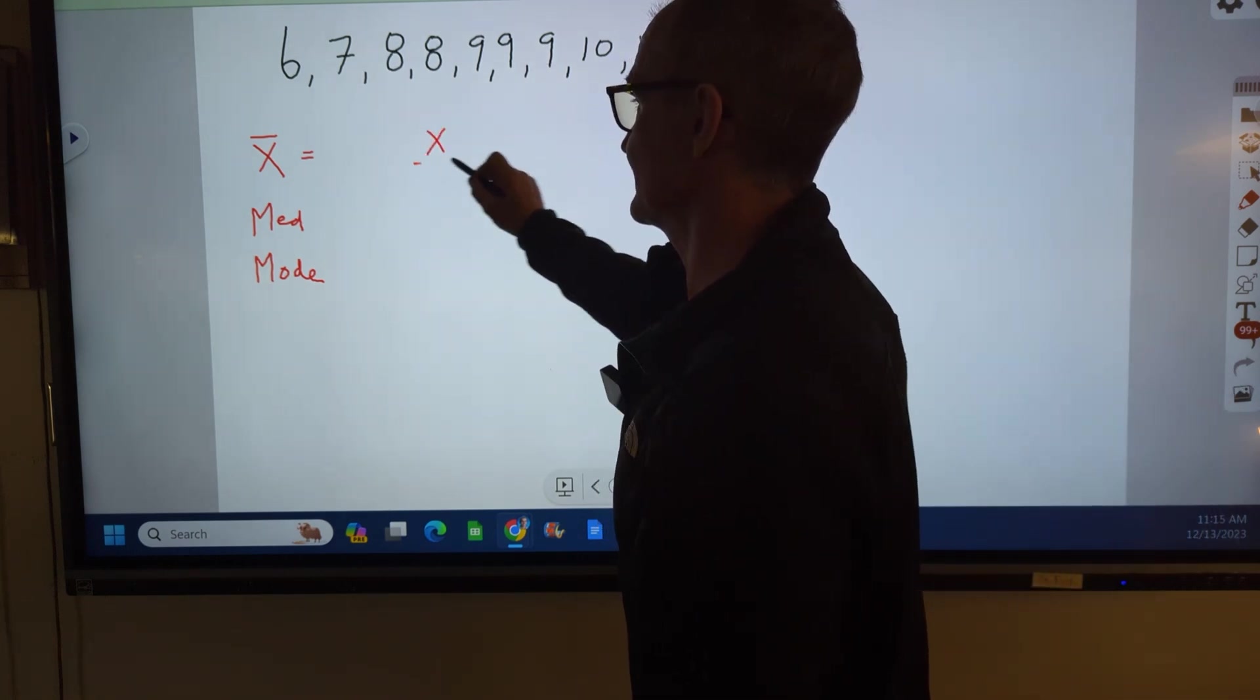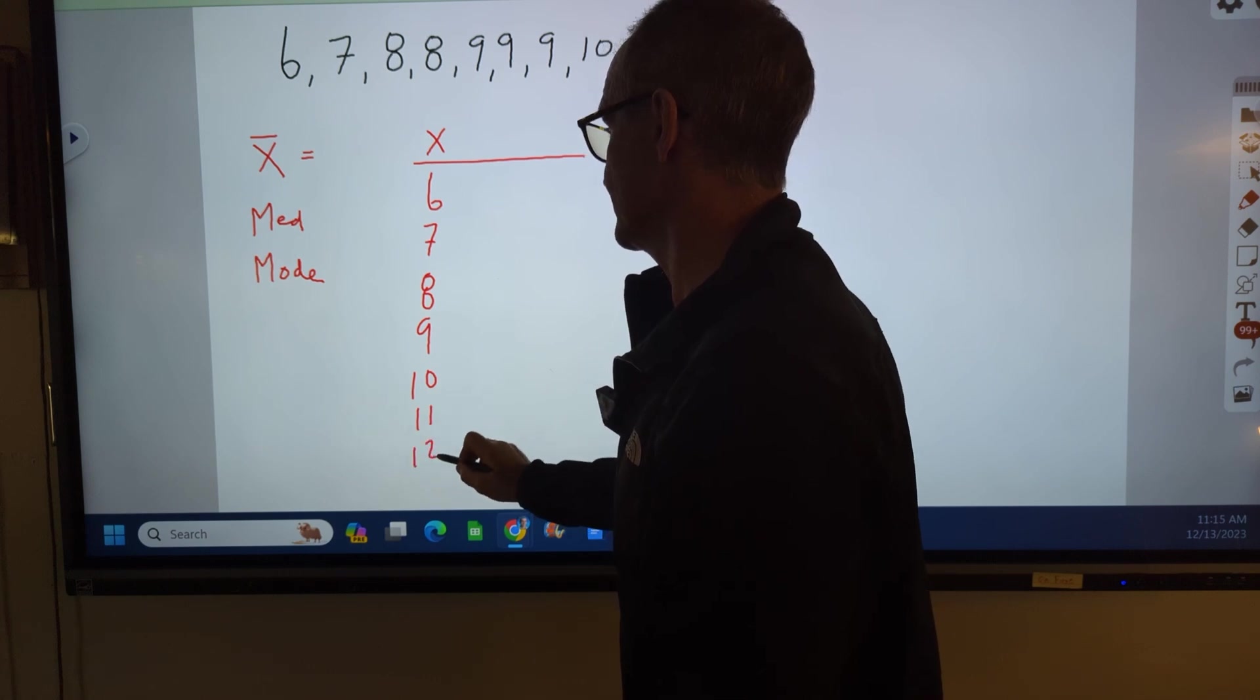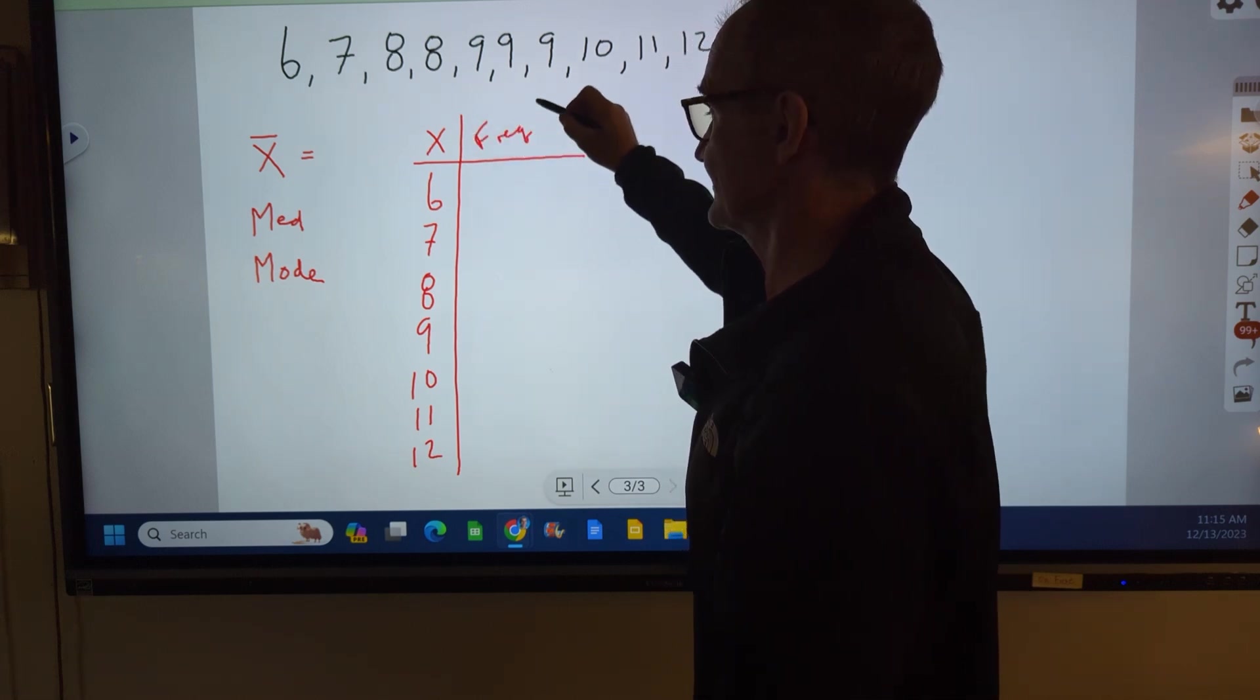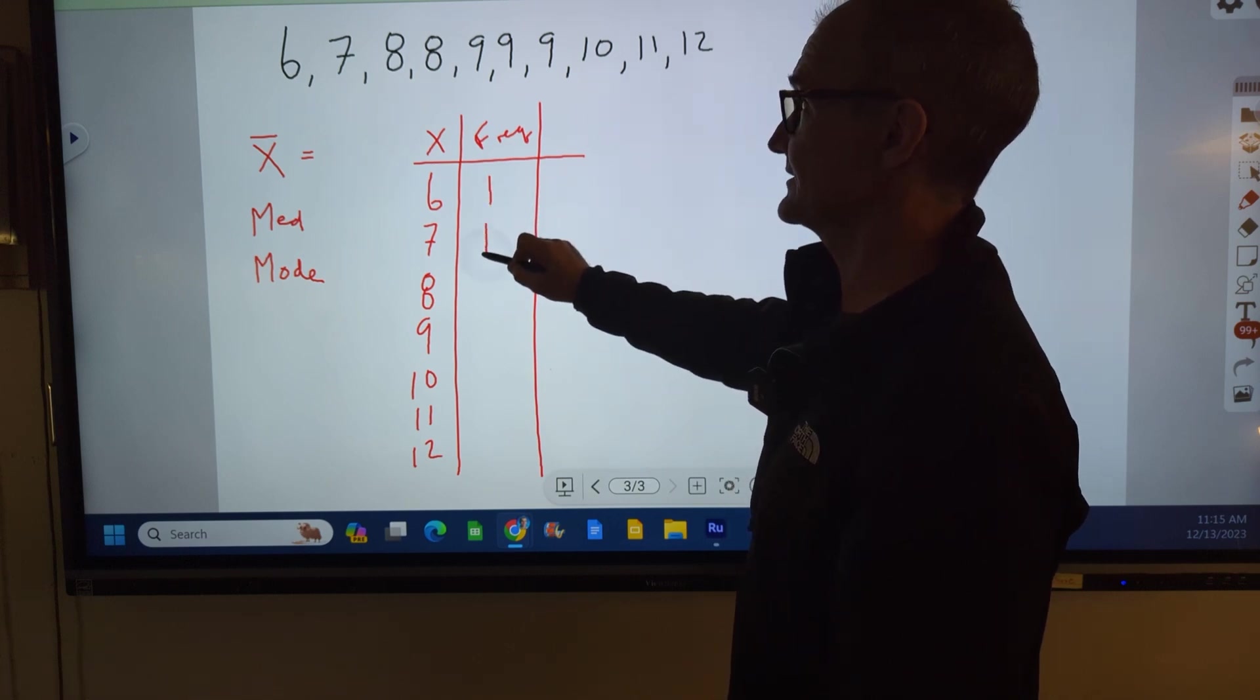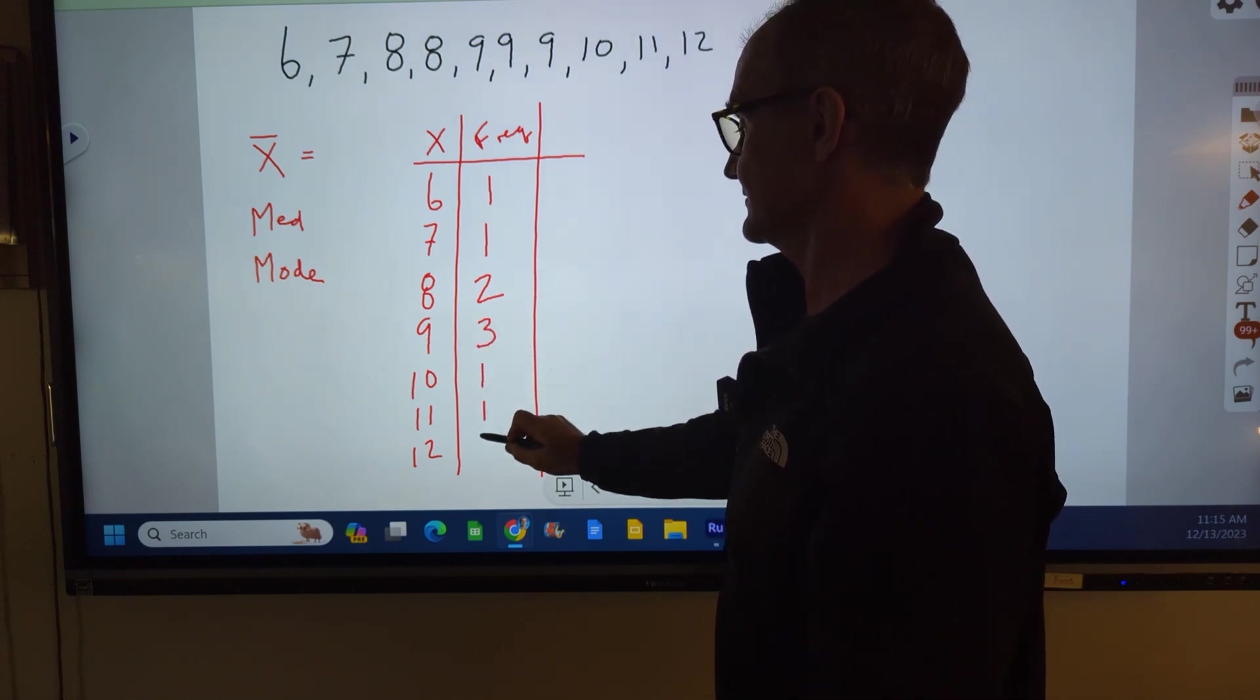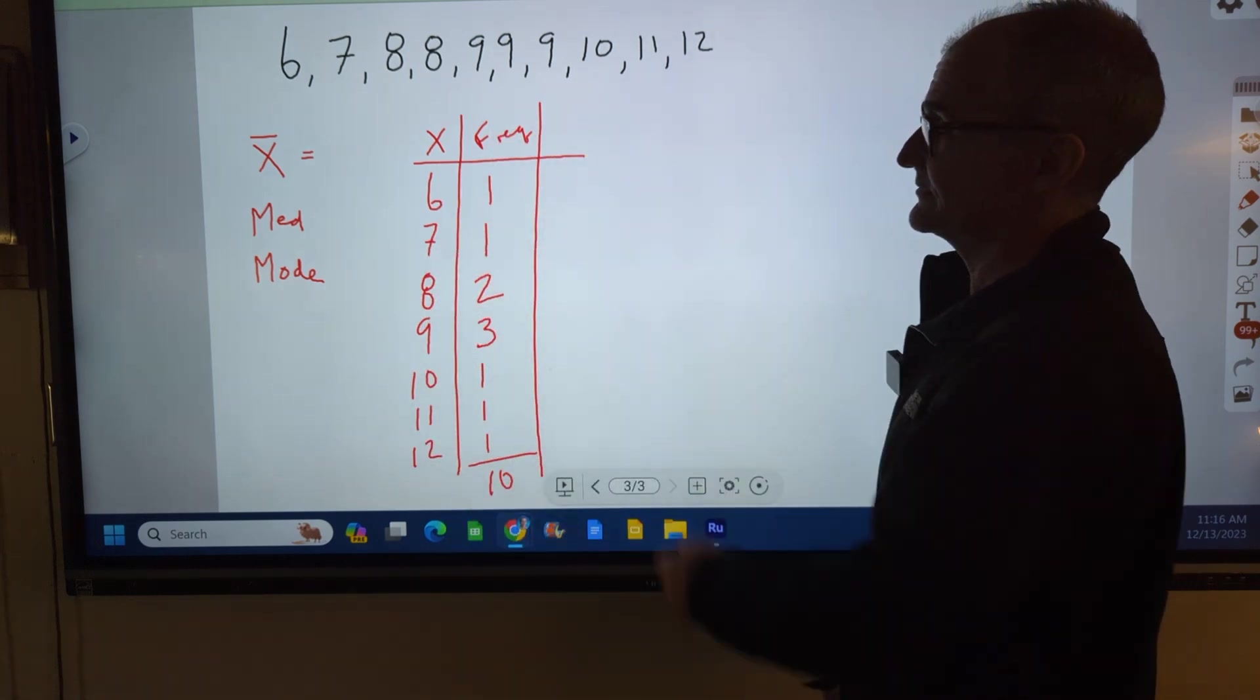We'll call that x, the actual value: 6, 7, 8, 9, 10, 11, 12. Next column is going to be the frequency, how often it occurs. So f(x), or frequency. I have one value of 6, one value of 7, two values of 8, three values of 9, and then 1, 1, and 1. My check is I add this up and I should get 10 because I have 10 values.